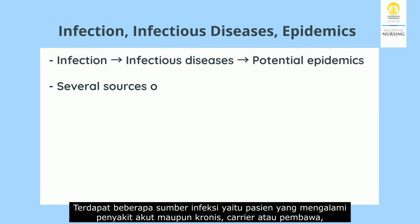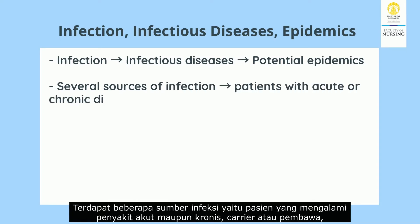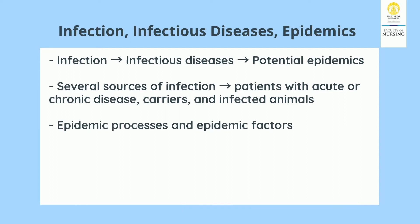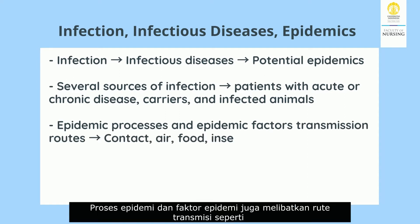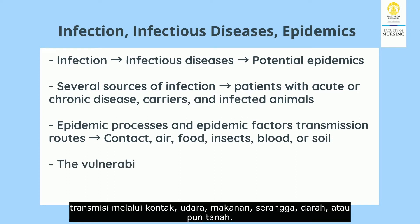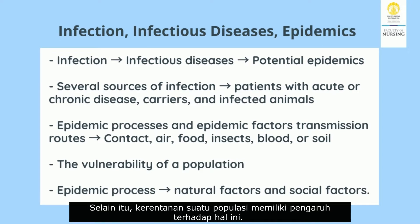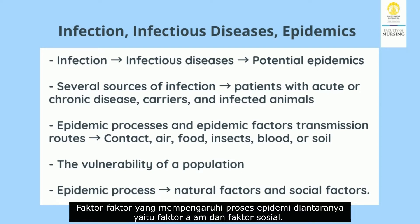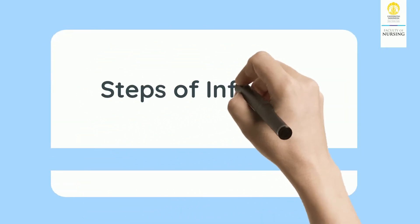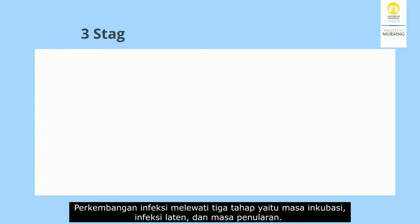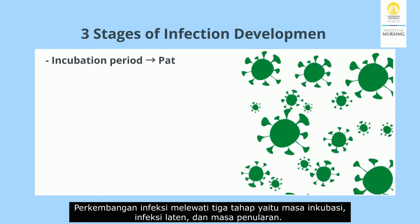There are several sources of infections: patients who experience acute or chronic disease, carriers, and infected animals. Epidemic processes also involve transmission routes such as contact, air, food, insects, blood, or soil. The vulnerability of a population also has an influence on this. Factors that influence the epidemic process include natural factors and social factors.